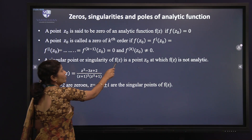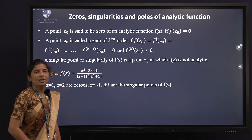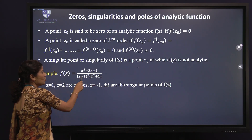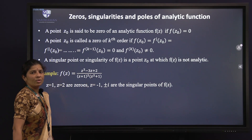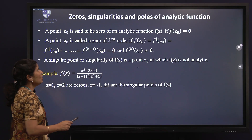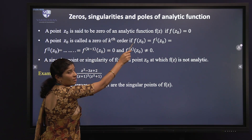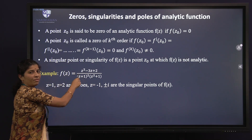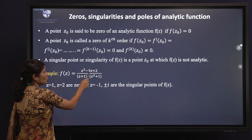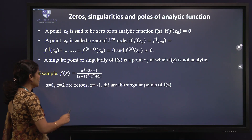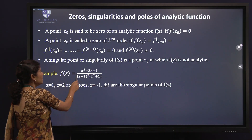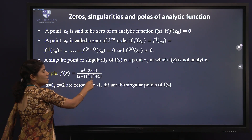A singular point or singularity of f(z) is a point z₀ at which f(z) is not analytic. For example, f(z) = (z² - 3z + 2) / [(z+1)² · (z² + 1)]. Here the zeros of the analytic function are where f(z₀) = 0, so replacing z with 1 and 2 gives f(z₀) = 0. Therefore z = 1 and z = 2 are the zeros of this analytic function.